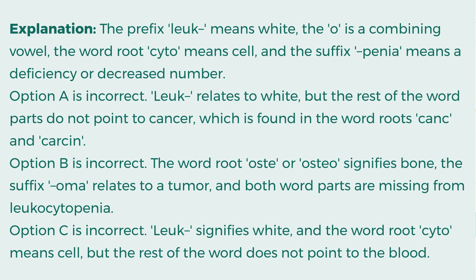Option A is incorrect. Leuk relates to white, but the rest of the word parts do not point to cancer, which is found in the word roots kank and karsin. Option B is incorrect. The word root osteo signifies bone, the suffix oma relates to a tumor, and both word parts are missing from leukocytopenia. Option C is incorrect. Leuk signifies white and the word root cyto means cell, but the rest of the word does not point to the blood.